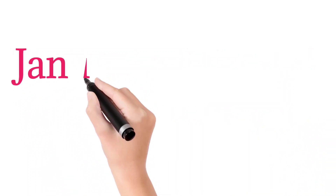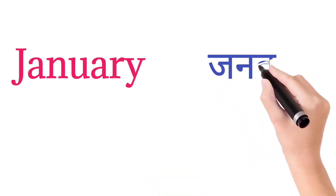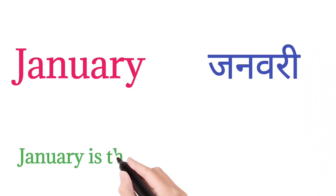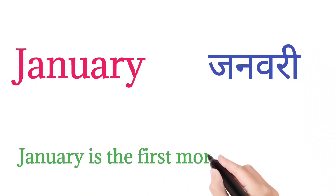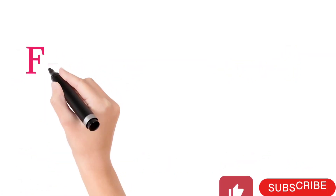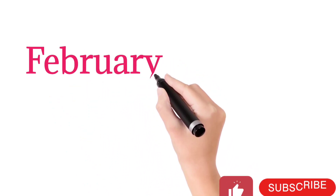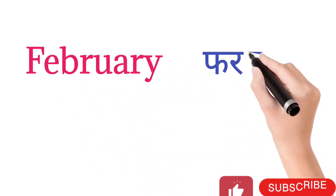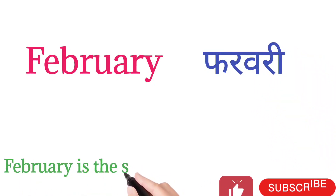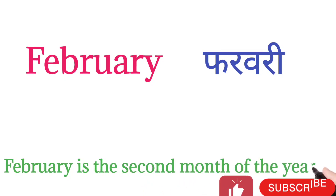January. January means January. January is the first month of the year. February. February means February. February is the second month of the year.